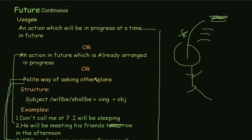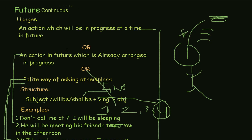Now let's see the structure of future continuous in detail. First we have the subject — the subject means the doer, the one who is doing the action, such as I, he, she. Then we have will or shall. If the subject is 'I' or 'we', we use 'shall be.' Then we have the fourth form of the verb — verbs have four forms: first, second, third, and fourth. Here we use the fourth form because this is the continuous form.